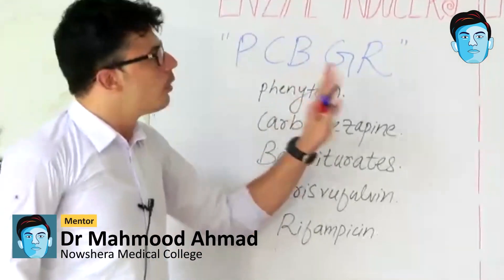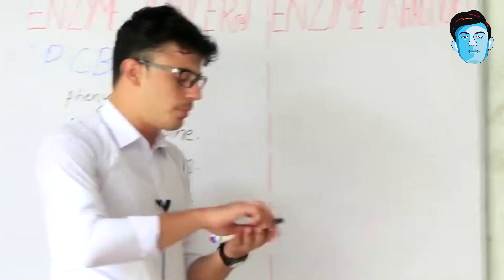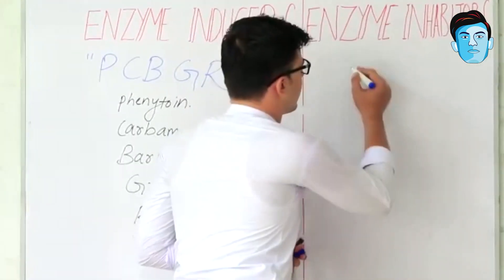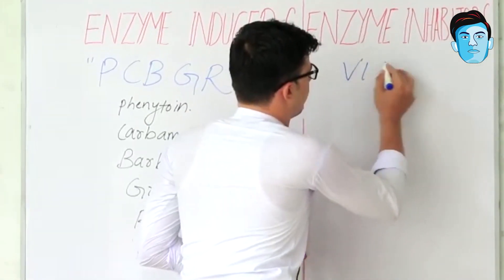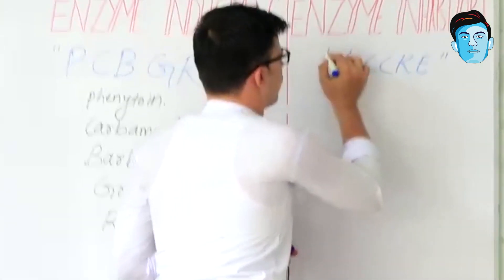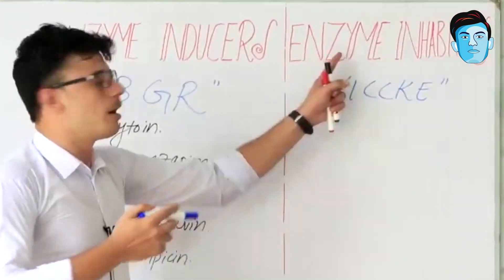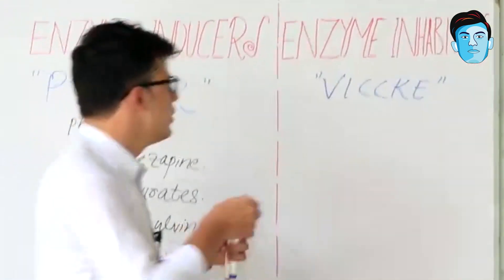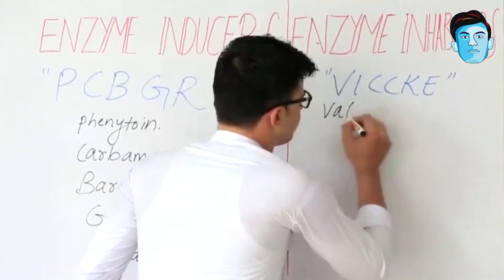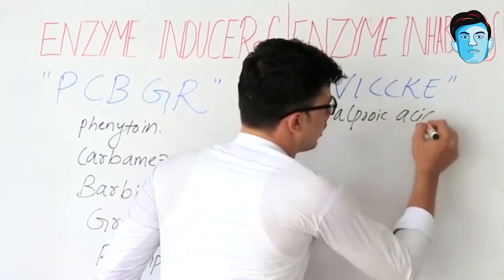Now let's move toward the enzyme inhibitors. For the enzyme inhibitors, we have a trick called VICE, where V stands for Valproic acid.